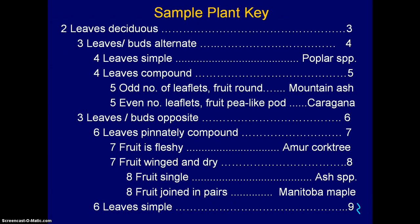This is the top portion of a sample plant key that shows how dichotomous keys are organized. When you see a unique number like this on the right-hand side, it means that there are more choices to make before you can identify the plant. In this case, number 3 on the right-hand side is directing you to two possible number 3s on the left-hand side, either leaves/buds alternate or leaves/buds opposite.